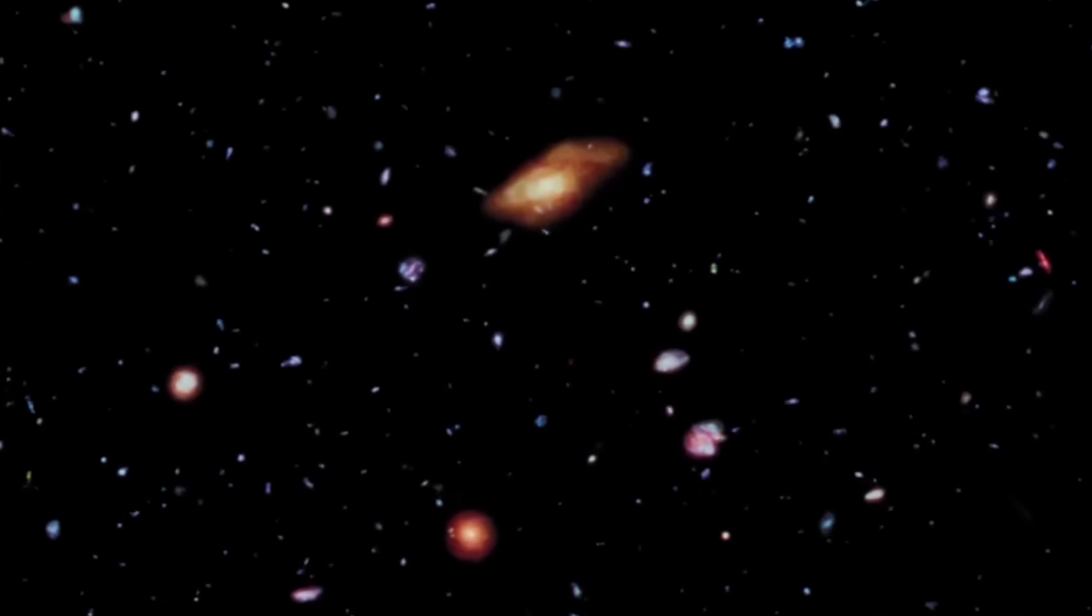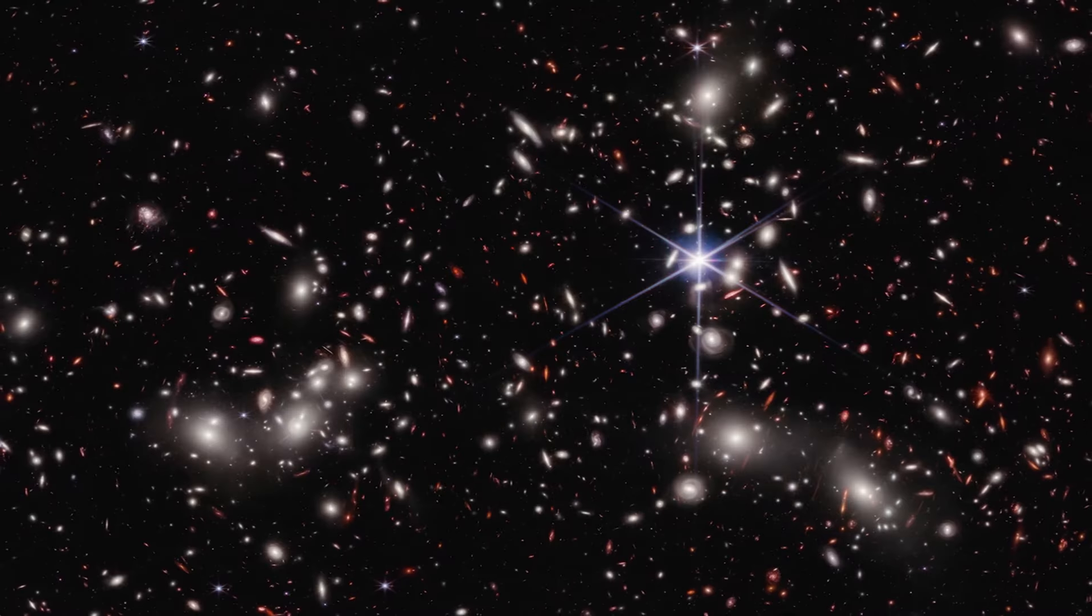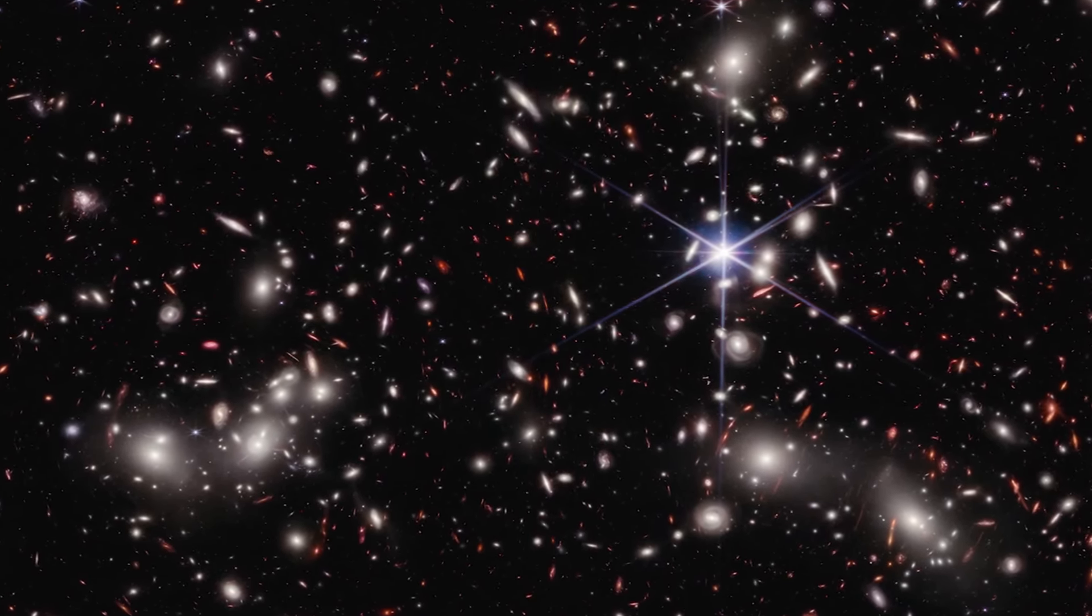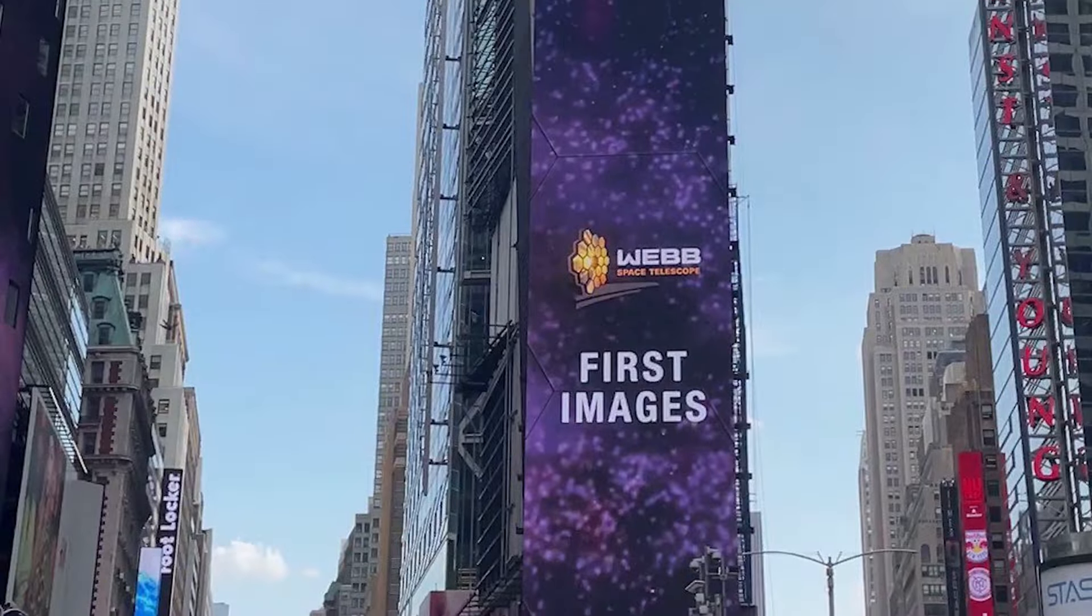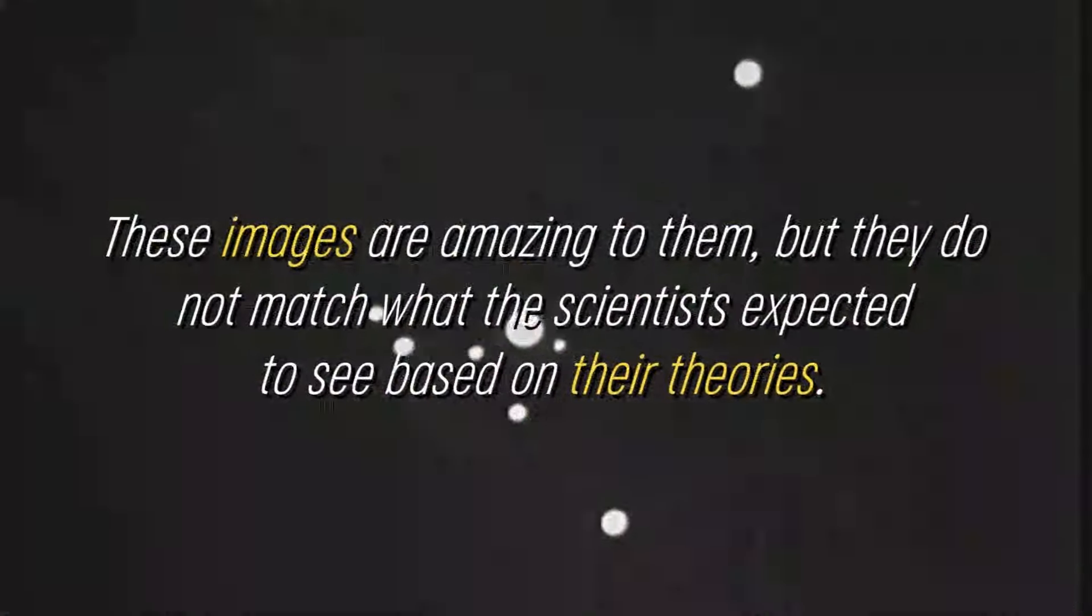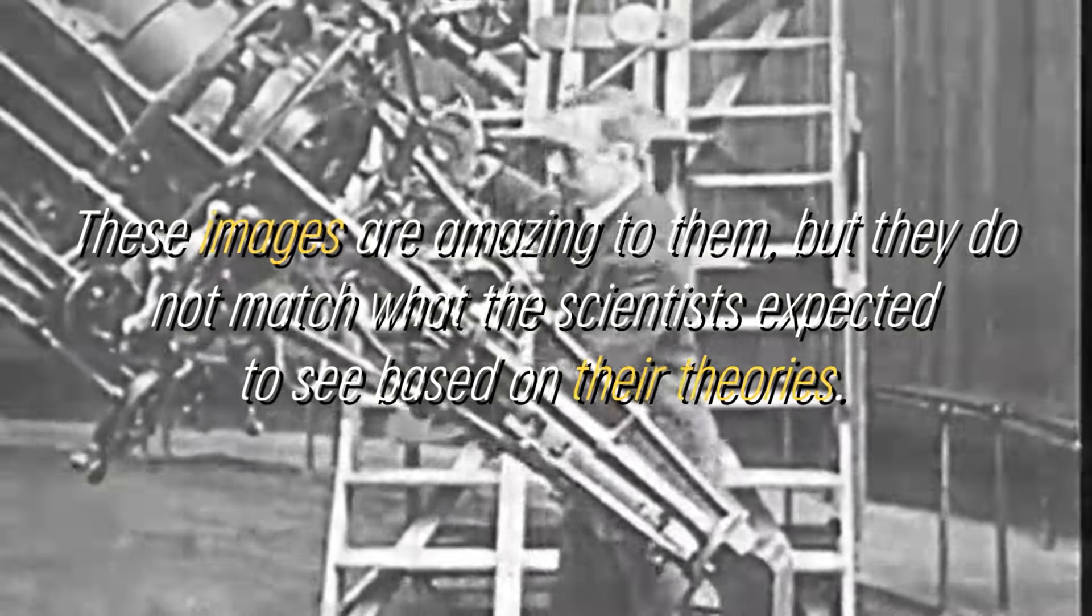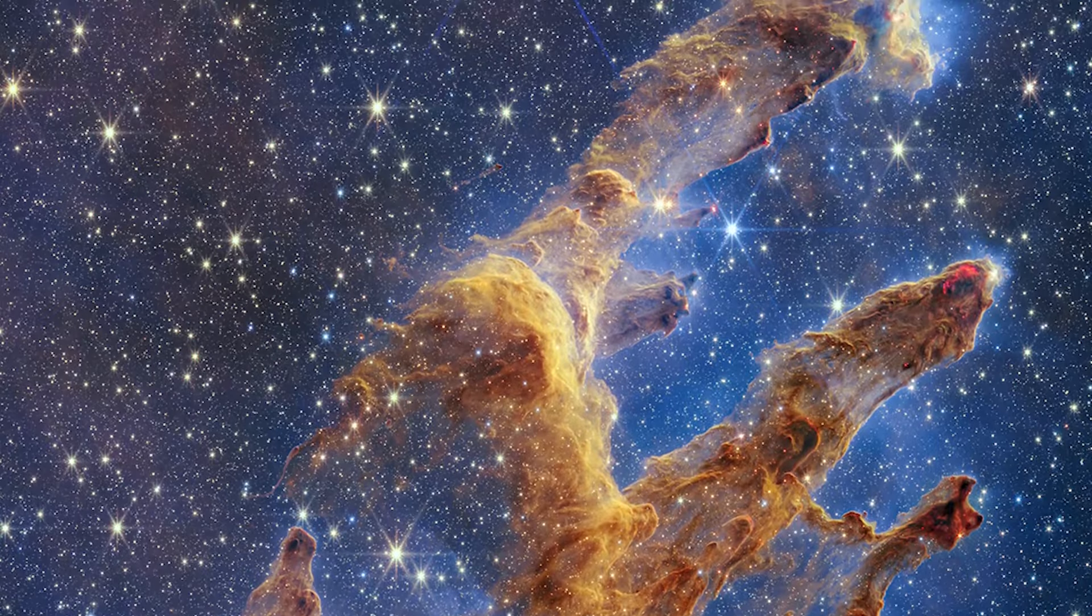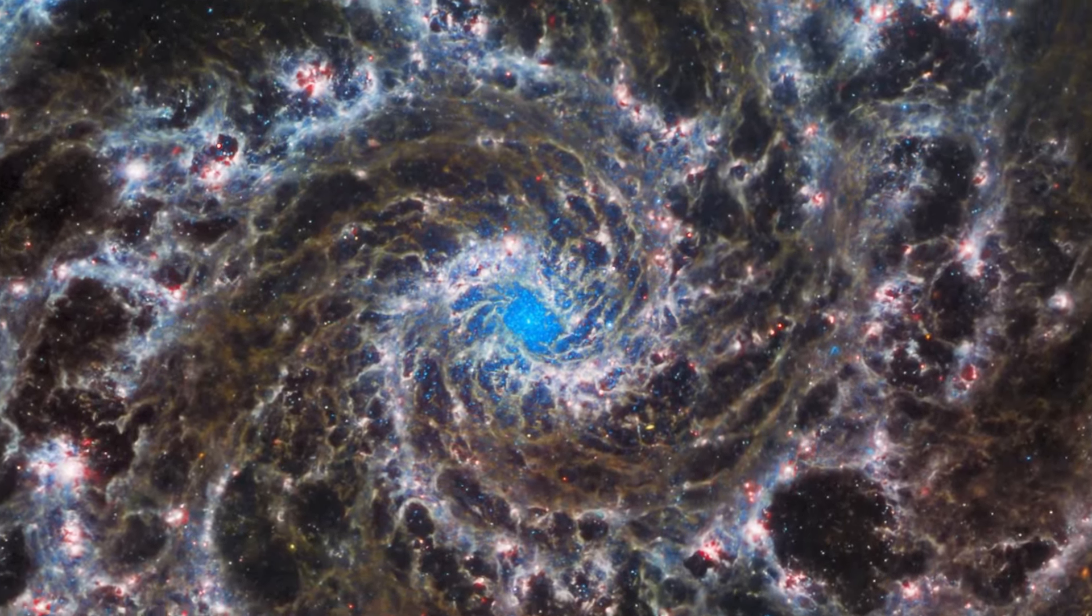The images of new galaxies captured by the James Webb Telescope are absolutely stunning. In a single image, we can see hundreds of galaxies, all together, and the beauty and power of these photos are stunning, something that cannot be overlooked. However, what seems to amaze the average person is precisely the opposite for researchers. These images are amazing to them, but they do not match what the scientists expected to see based on their theories. In fact, many more galaxies are being seen than expected, and these galaxies are different from the rest. They are smaller than imagined and have a truly remarkable age.